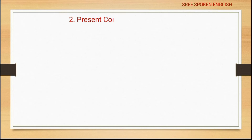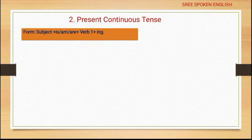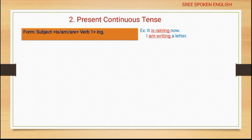Moving on to the second subcategory: present continuous tense. The form is: subject + is/am/are + verb first form (in -ing form). Example: 'It is raining now.' Another example: 'I am writing a letter.'